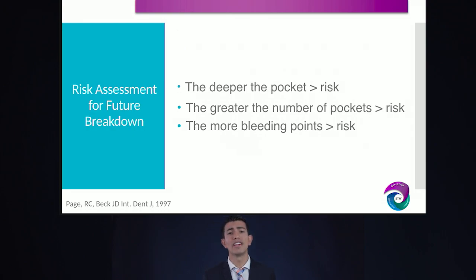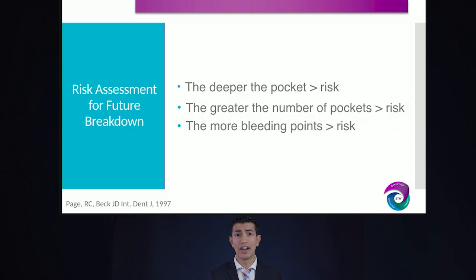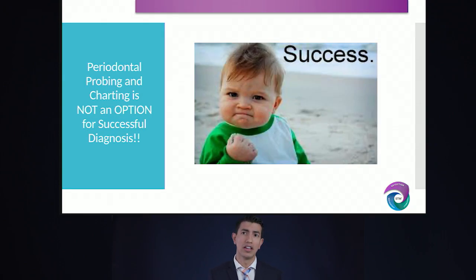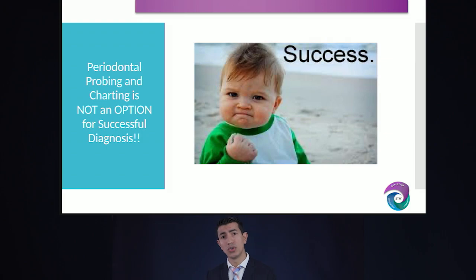We also need to communicate the risk assessment with patients. The deeper the pocket, the higher the risk. The greater number of pockets, the higher the risk. The more bleeding points, the higher the risk for infection. This disease is not going to be controlled unless we actually treat it. If we do accurate periodontal probing and charting, we're going to have a successful diagnosis, and we can move from diagnosis to the treatment phase.